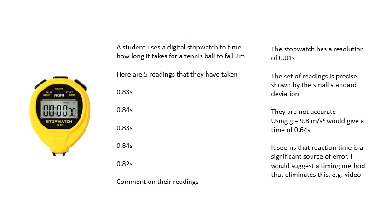If little g is 9.8, that should be 0.64 seconds. It seems that reaction time is a significant source of error, systematic error. And I would suggest a timing method that eliminates that, for example, a video or some kind of, you let go of it with an electromagnet and it hits a gate, et cetera, some electronic way of measuring the time.